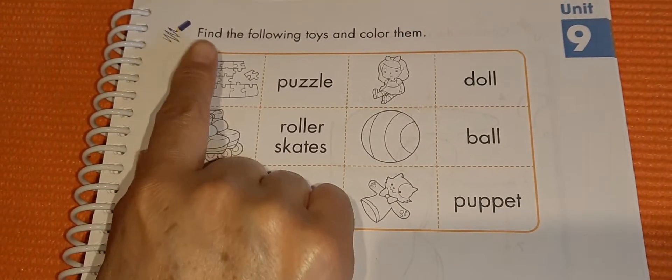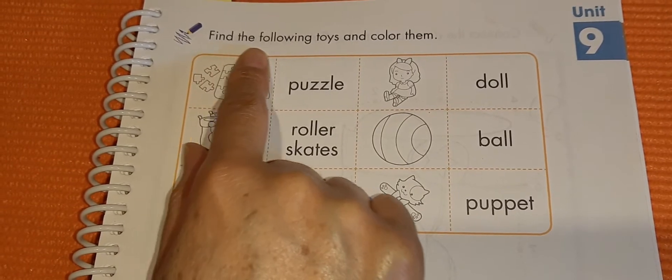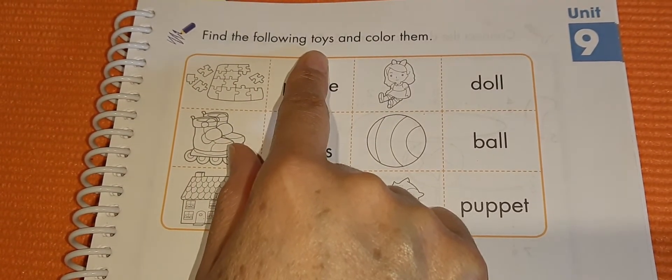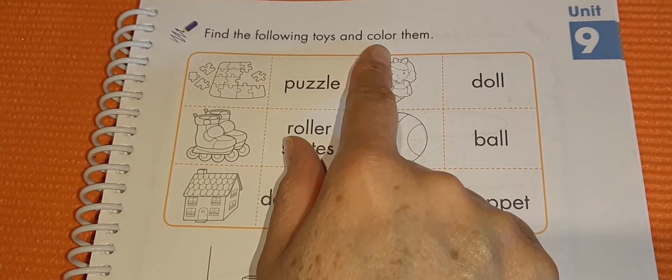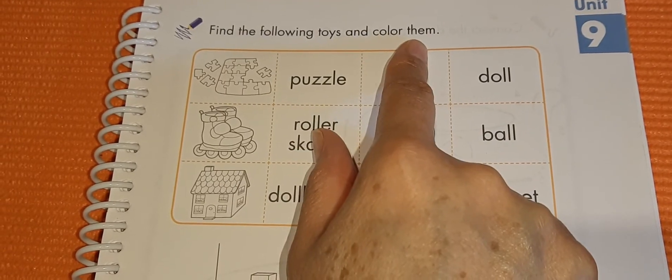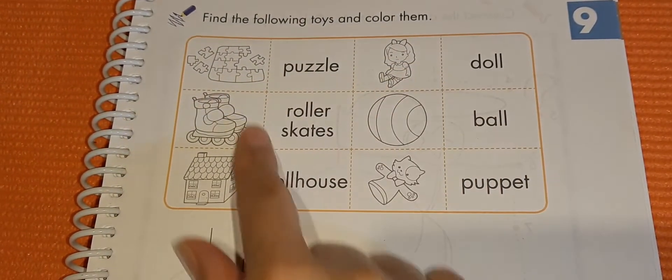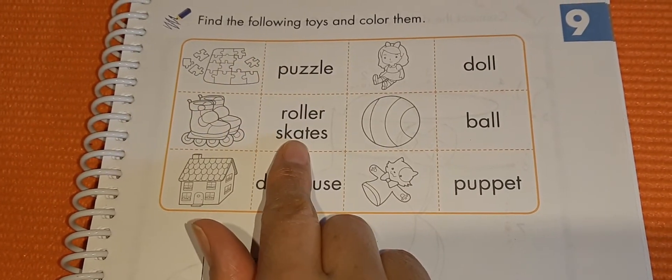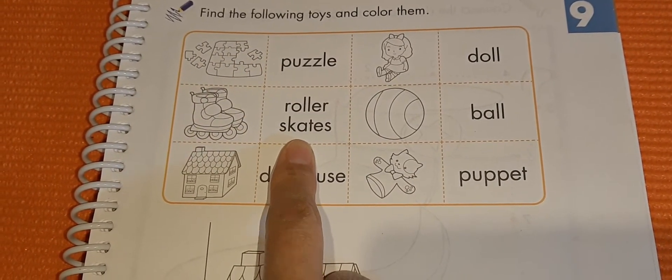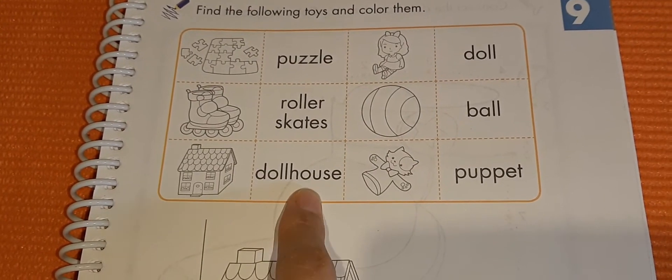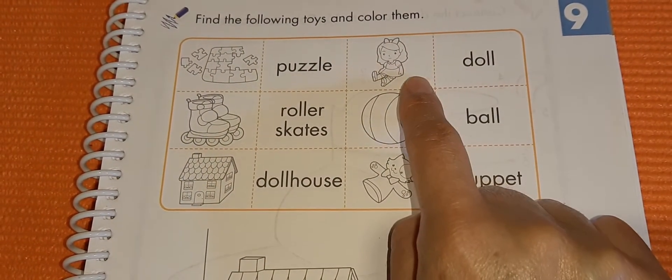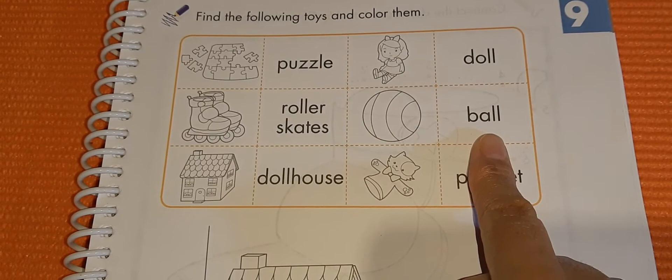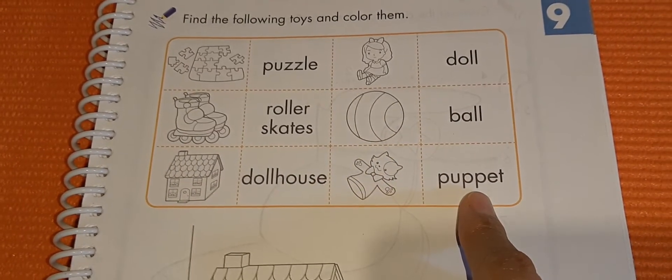Read with me. Find the following toys and color them. Read with me, please. Puzzle, roller skates, dollhouse, doll, ball, puppet.